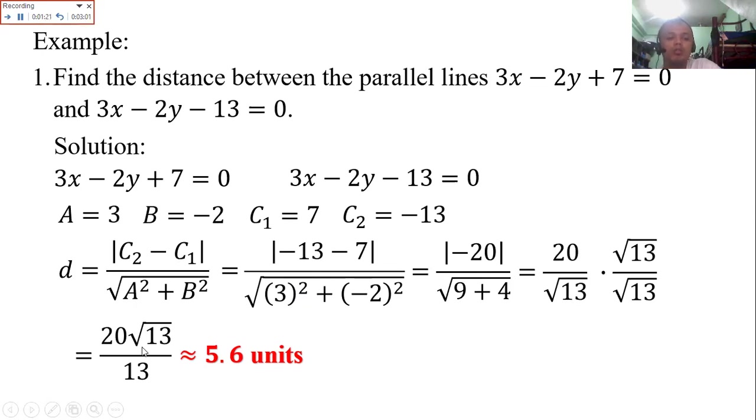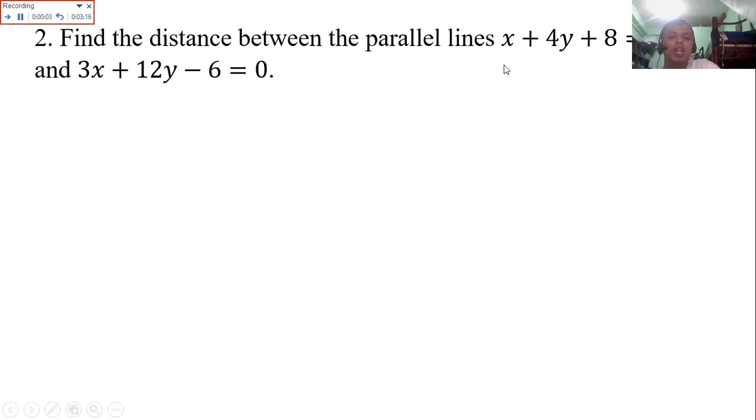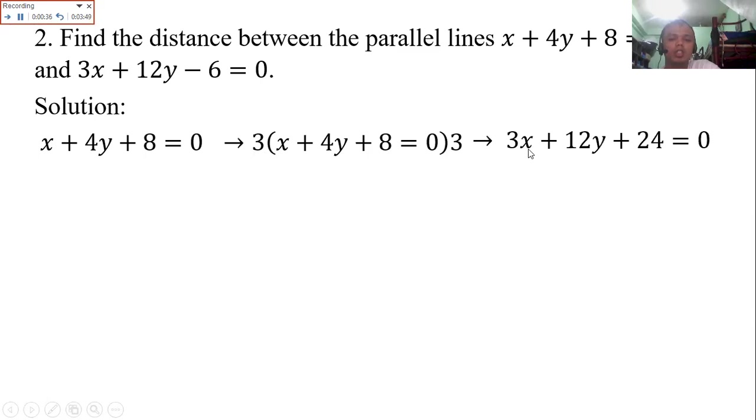Take the value of square root of 13, then multiply by 20, then divide by 13. So you get this answer, rounded off. This is the distance. Next, find the distance between the parallel lines x plus 4y plus 8 equal to 0 and 3x plus 12y minus 6 equal to 0. Let's look at these two equations. As you can see, the x in the first equation x plus 4y plus 8 is different from the second equation which is 3x plus 12y minus 6. They're different. Since they're parallel lines, we need to make them the same by multiplying the first equation by 3. Because there's a 3x here, to make it 3x, multiply by 3. So 3 times x is 3x, 3 times 4 is 12, 8 times 3 is 24.